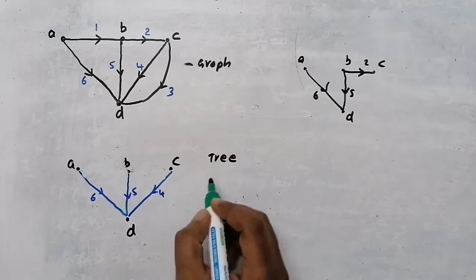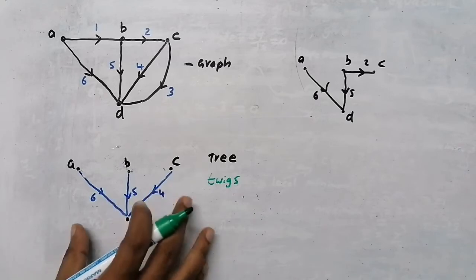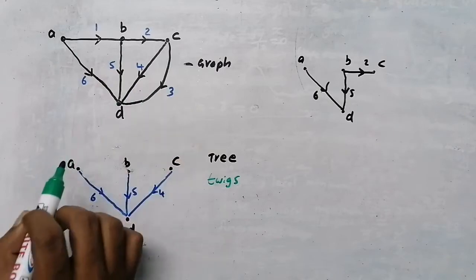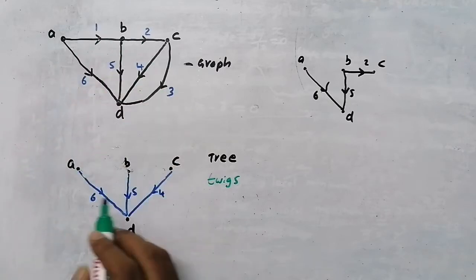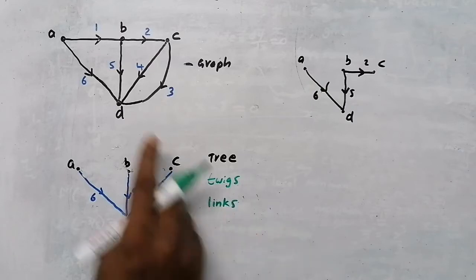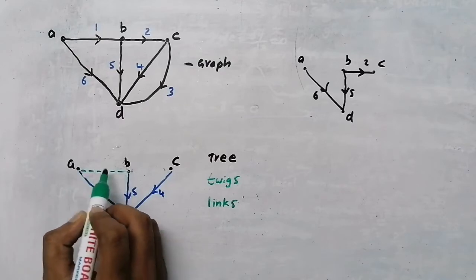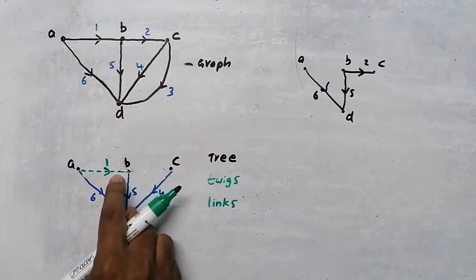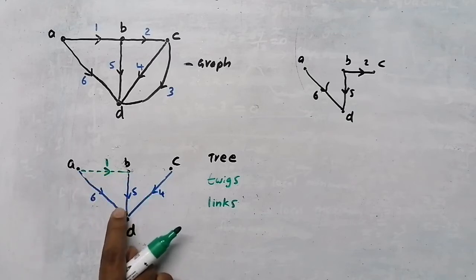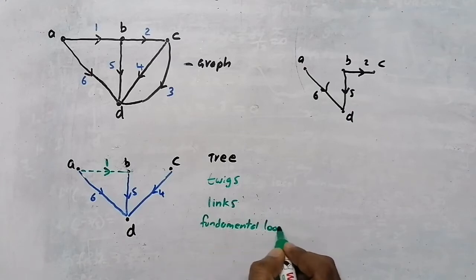In a tree, the branches are known as twigs. The branches not part of this tree — branch 1, branch 2 and branch 3 — are called links. Now I am going to take one of the links, link 1, and place it here. As soon as I place link 1, it forms a closed path — a closed loop. That loop is called a fundamental loop.